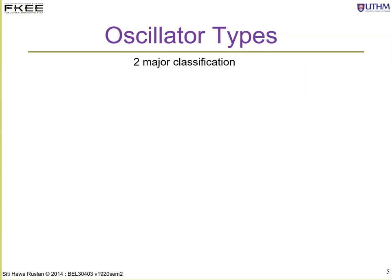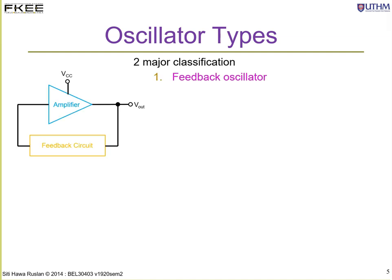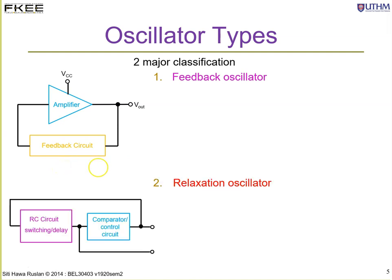There are two major classifications of oscillator. The first is the feedback oscillator, which has an amplifier and a feedback circuit. The other is the relaxation oscillator, which uses an RC timer circuit to control the operation of the circuit.